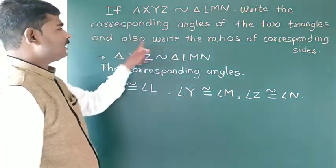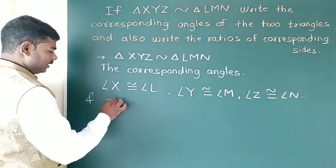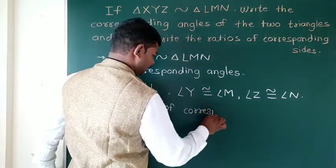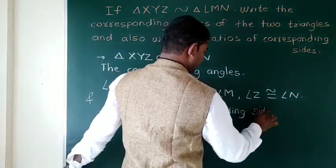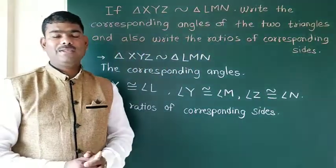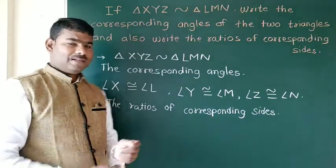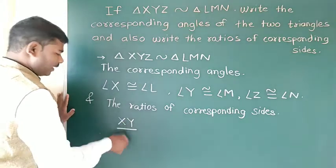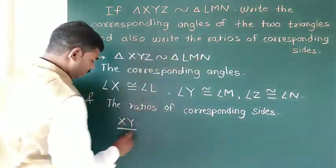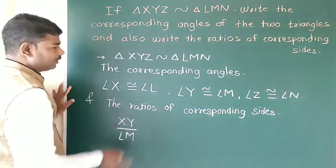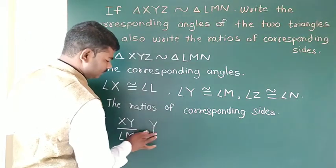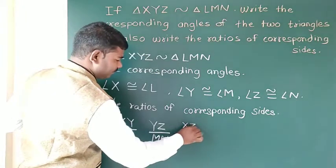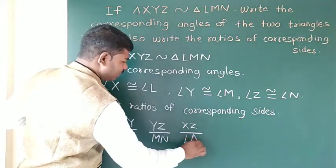Also, write the ratio of corresponding sides. Since the two triangles are similar, the ratio of corresponding sides is equal. The corresponding side XY corresponds to side LM, and the other corresponding sides follow accordingly.